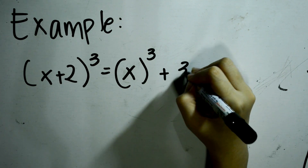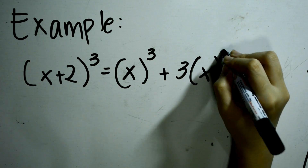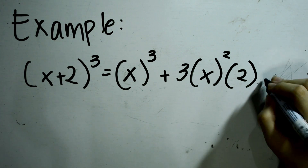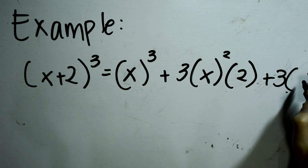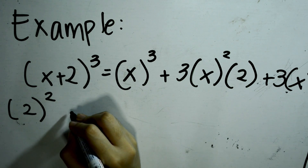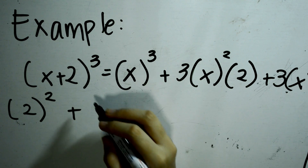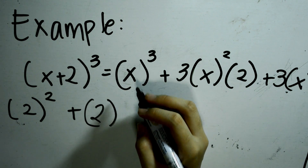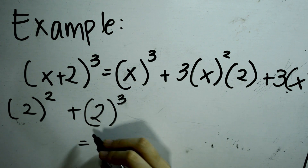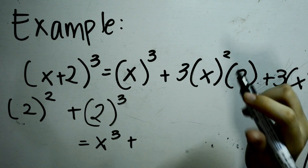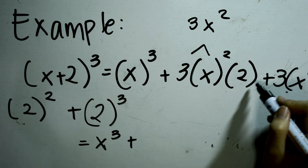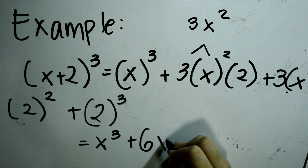Plus 3 times the square of the first term, which is x, times the second term. Then, plus 3 times the first term, times the square of the second term. So, 3 times x squared equals 3x squared, times 2 equals 6x squared.